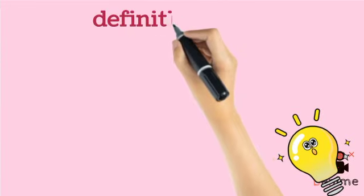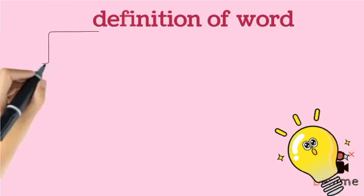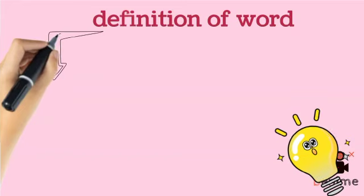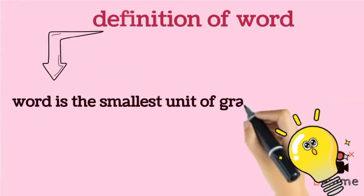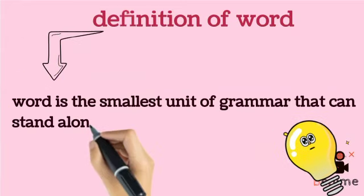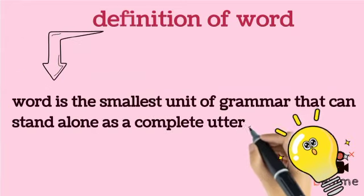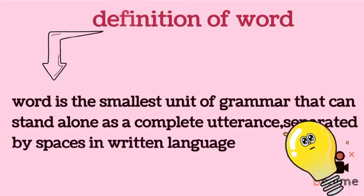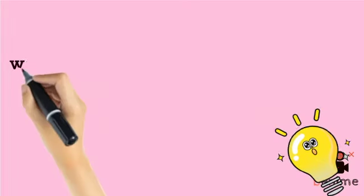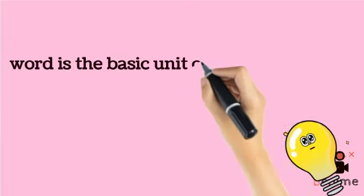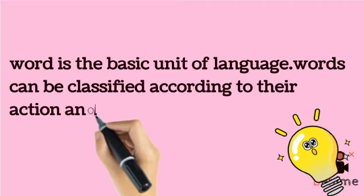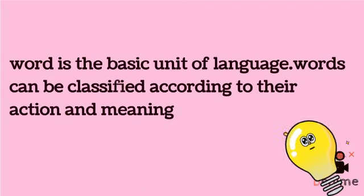The first question is about the definition of words. A word is the smallest unit of grammar that can stand alone as a complete utterance, separated by spaces in written language. A word is a basic unit of language, and words can be classified according to their action and meaning.